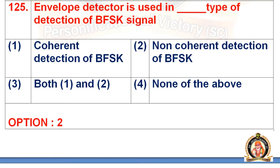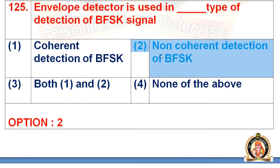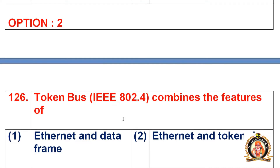Question 125: The envelope detector is used in dash type of detection of BFSK signal. Options are coherent detection of BFSK, non-coherent detection of BFSK, both 1 and 2, and none of the above. The right option is the second option, that is non-coherent detection of BFSK. The envelope detector is used in non-coherent detection of BFSK.